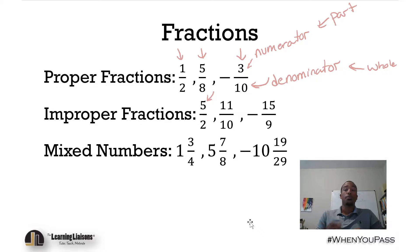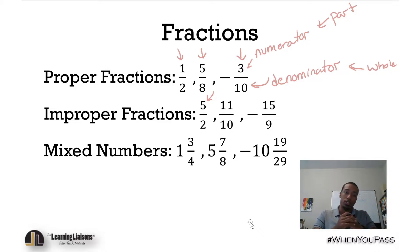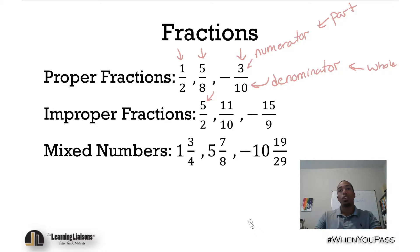Lastly, we have mixed numbers. Mixed numbers are a whole number followed by a fraction, and they're generally greater than one. So we have mixed numbers like one and three-quarters — that's one point, and three divided by four, which is 0.75.